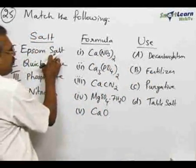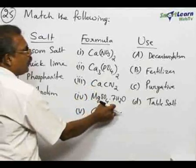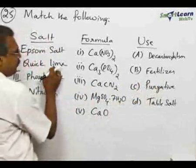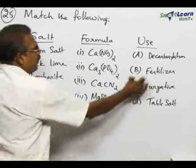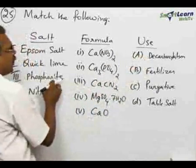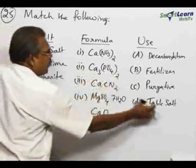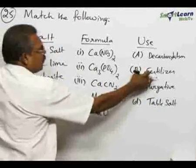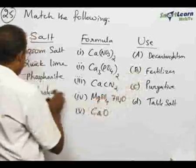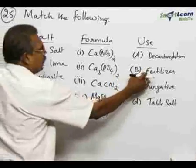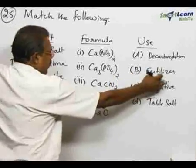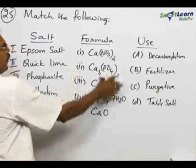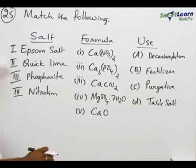Therefore, the final matching is: Epsom salt with MgSO₄·7H₂O and purgative; quick lime with calcium oxide and decarboxylation; phosphoryte with Ca₃(PO₄)₂ and table salt; and nitrolim with Ca(CN)₂ as a fertilizer. This is the way in which we have to go for the matching.